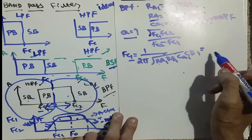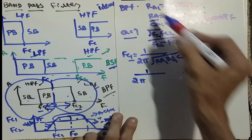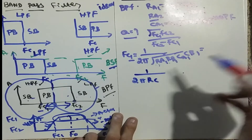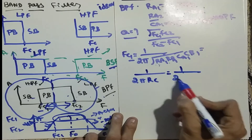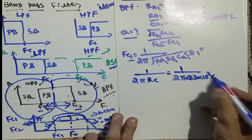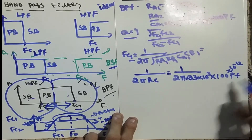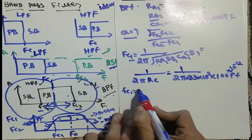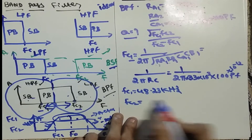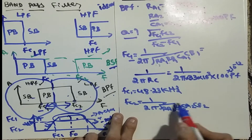Since Ra1 = Rb1, we can simplify: fc1 = 1 divided by 2π × R × C, where R is 33 kΩ = 33 × 10³ and C is 100 pF = 10⁻¹². Calculating this gives fc1 = 48.23 kHz. Similarly, fc2 = 1 divided by 2π times the square root of Ra2 × Rb2 × Ca2 × Cb2.